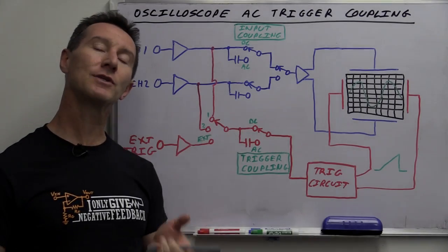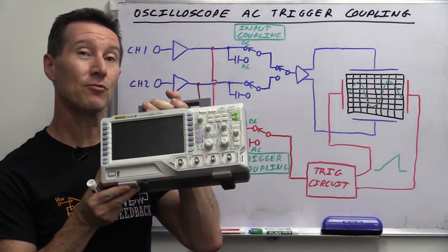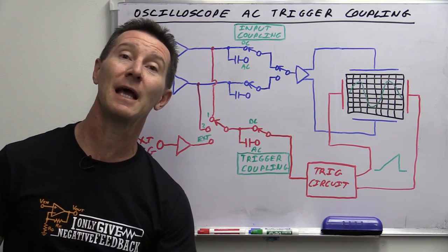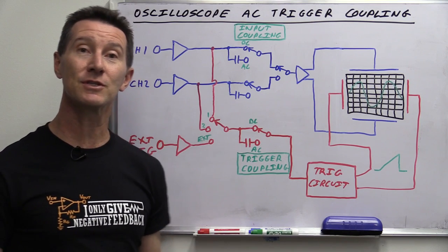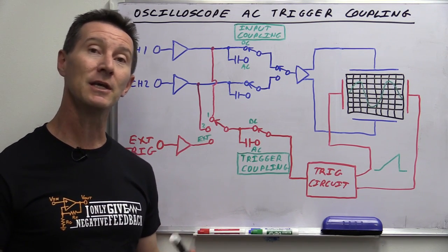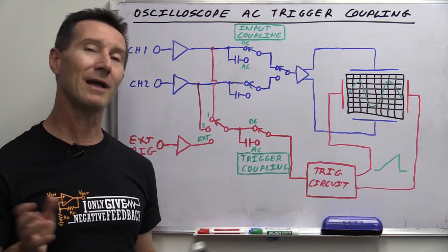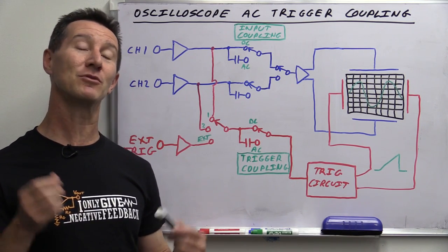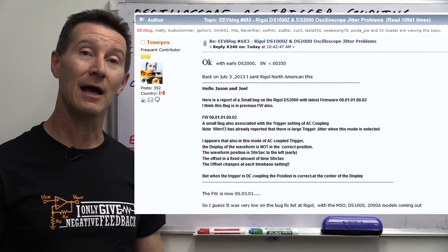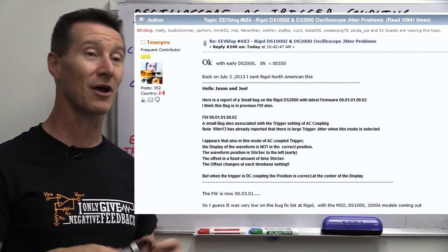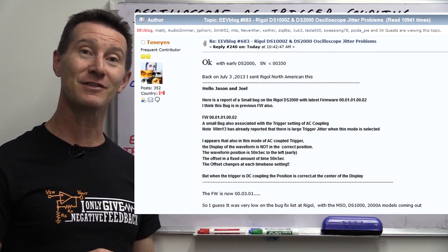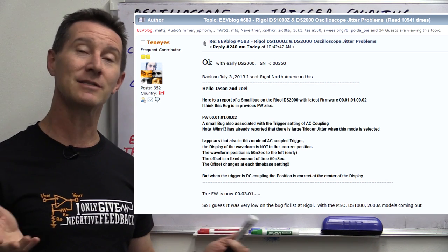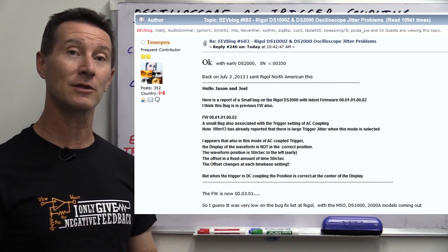Hi. In a recent video I looked at a few problems with the new Rigol DS-1054Z oscilloscope and also the DS-2000 series oscilloscope. I discovered a problem with the AC trigger coupling, and as it turns out this is actually not a new problem in the DS-2000 — it was reported back in July 2013. Apparently Rigol haven't fixed it and it seems new to them again. They responded very quickly, said yes, they're looking into it, they're working on it.